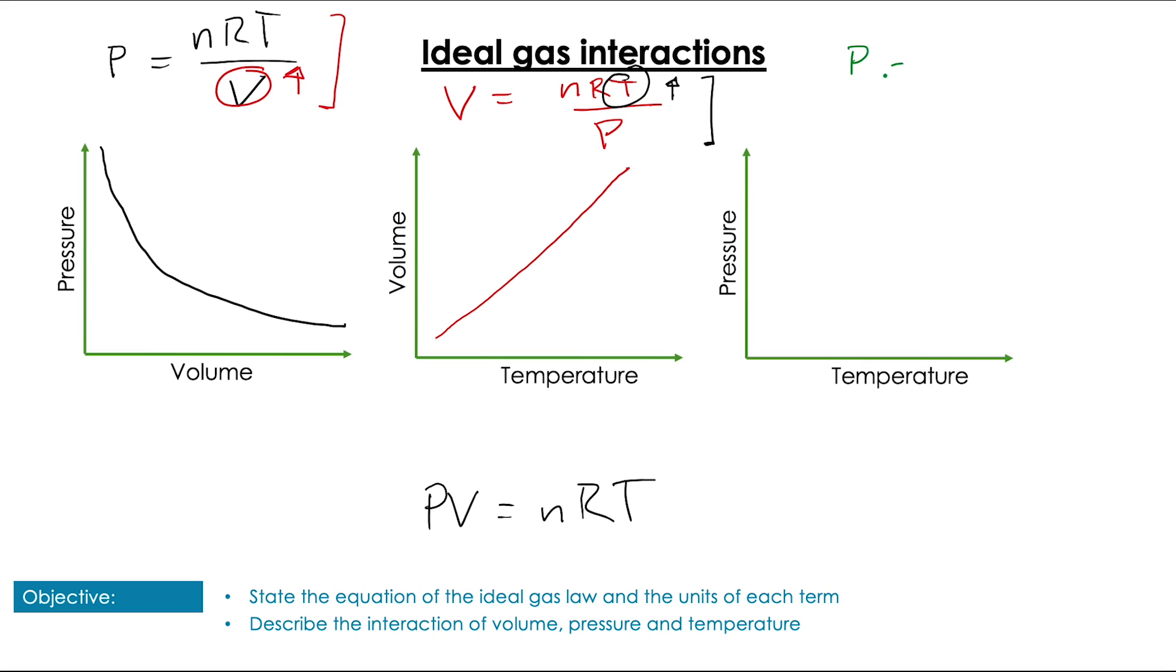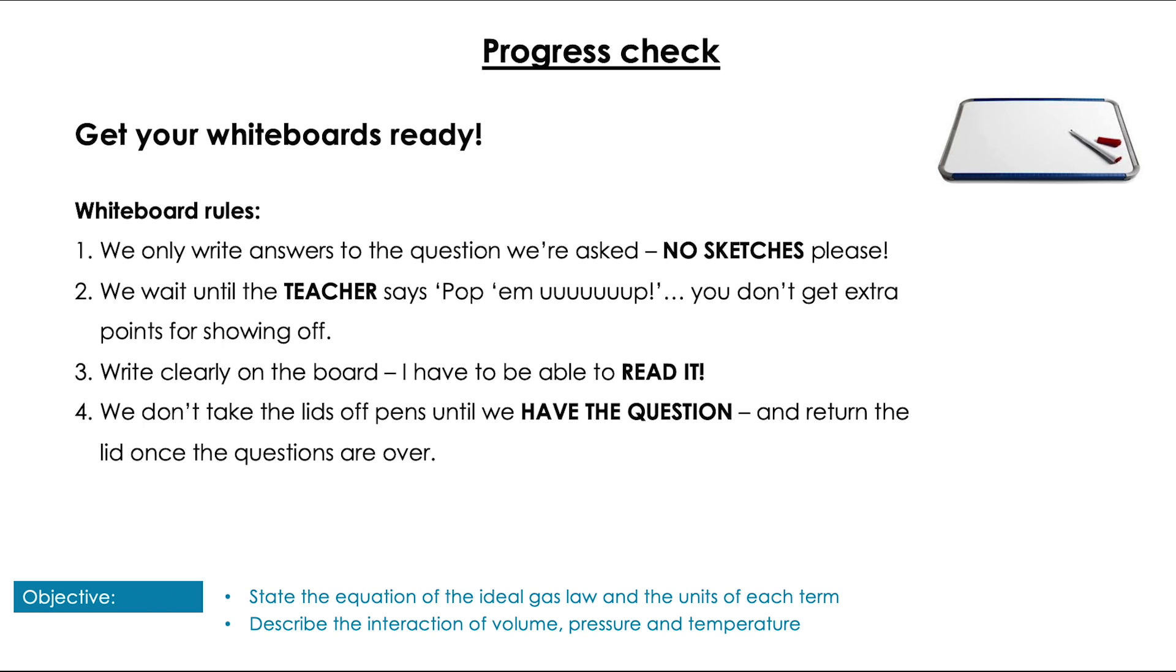Finally, we can do the same, again rearranging for pressure, but this time looking at how temperature will affect it. Well, we can see it's on the top of the fraction, so we're going to have the directly proportional relationship we had with our second graph. So before we get stuck into calculations, let's just do a question on what we've done so far.